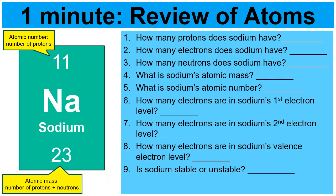For number one: how many protons does sodium have? 11. Number two, how many electrons? Also 11, because protons and electrons are usually the same. Number three, how many neutrons? It's 12 — 11 protons plus what mystery number adds up to 23? That would be 12.